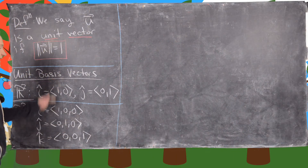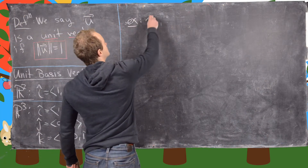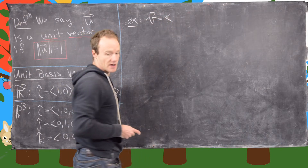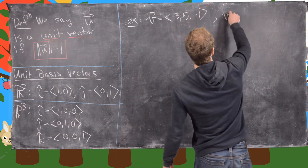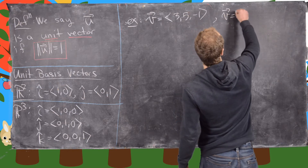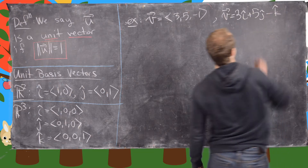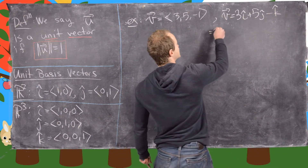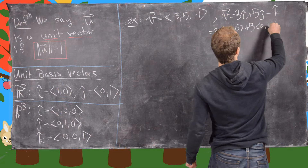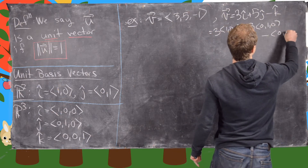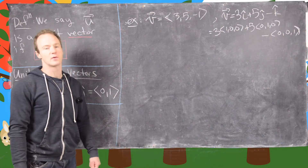These vectors will be used as another way to write down vectors in general. For example, we could say v is the vector (3, 5, -1), but we could also write v as 3i + 5j - k, because that is 3 times (1,0,0) plus 5 times (0,1,0) minus (0,0,1). This gives us an alternative way of writing down vectors.